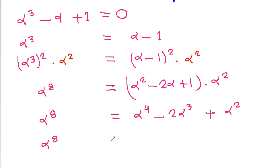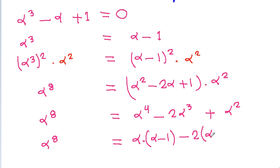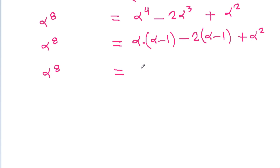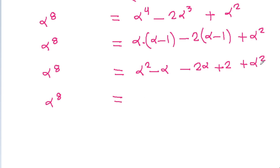Now alpha⁴ = alpha times alpha³ and alpha³ = alpha - 1, so substituting: alpha⁸ = alpha(alpha - 1) - 2(alpha - 1) + alpha². Expanding, alpha⁸ = alpha² - alpha - 2alpha + 2 + alpha², which simplifies to alpha⁸ = 2alpha² - 3alpha + 2.